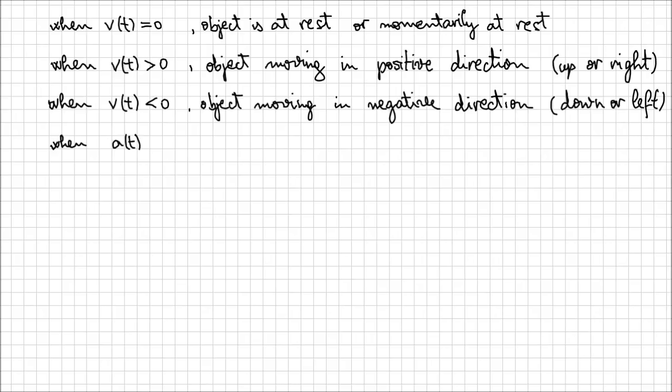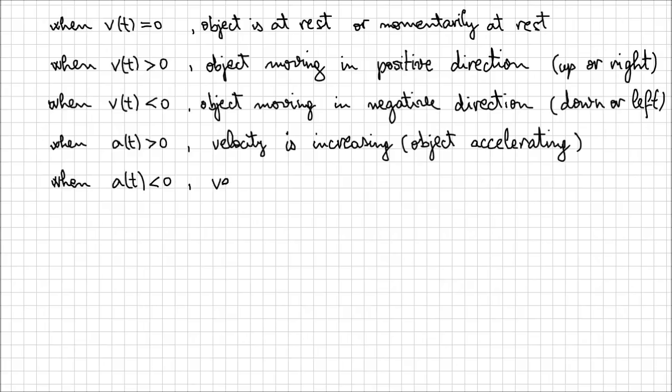When acceleration a of t is greater than zero, we say that the velocity of that object is increasing or the object is accelerating. It's a more common way to refer to this situation. When a of t, the acceleration, has a negative value, then the velocity is decreasing or the object is decelerating.